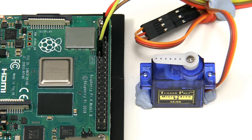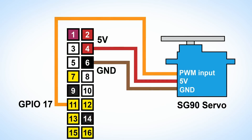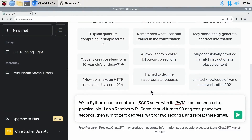I've now wired up an SG90 servo to the Raspberry Pi. Looking at the wiring diagram, we can see more clearly what's going on: the 5 volt power and ground are connected to pins 4 and 6 on the Raspberry Pi. You don't normally power a servo from a Raspberry Pi — they're normally powered separately — but one SG90 for a test will be fine. The PWM (pulse width modulation) control signal for the servo is connected to Raspberry Pi pin 11. Let's go across to ChatGPT.